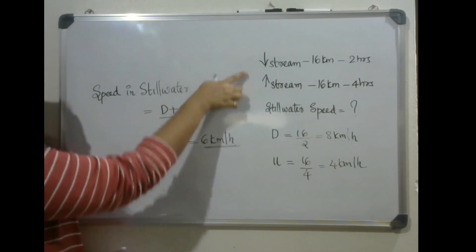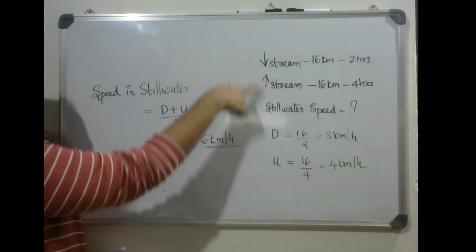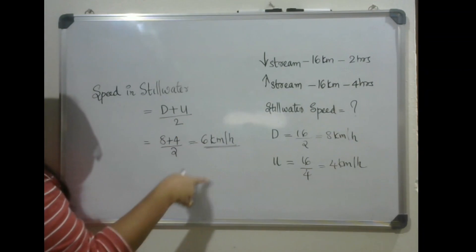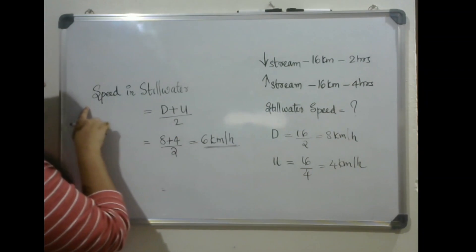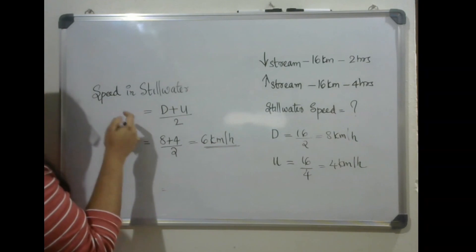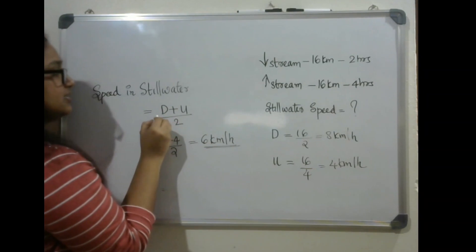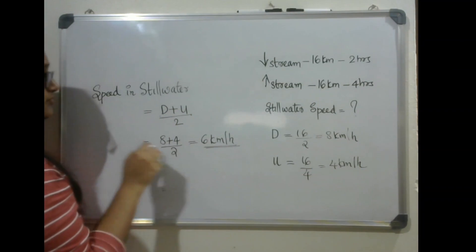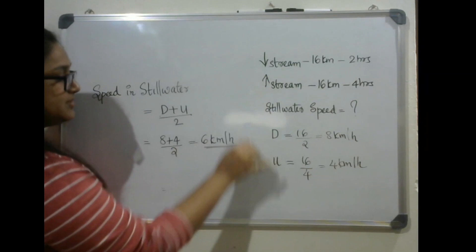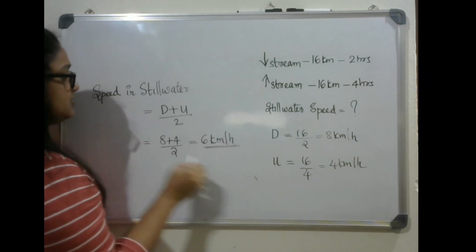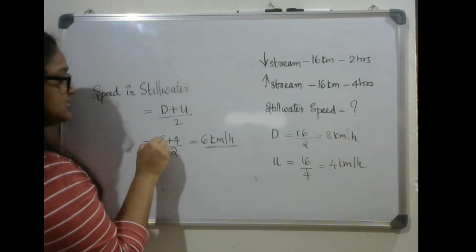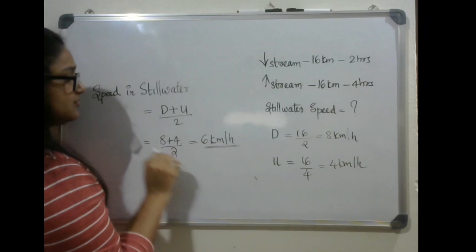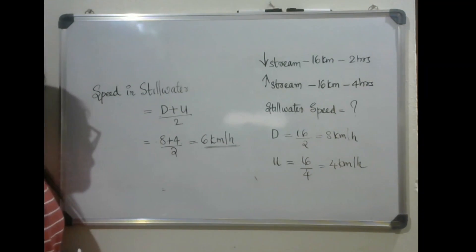So when given the downstream and upstream rates, you find the speed in still water which equals downstream rate plus upstream rate divided by 2. From the given information, that equals 6 kilometers per hour.